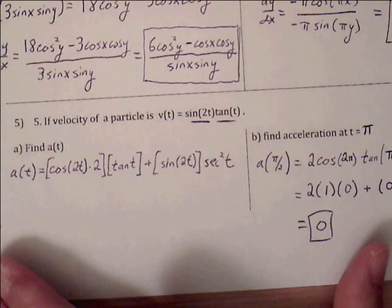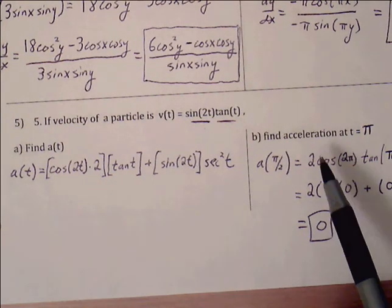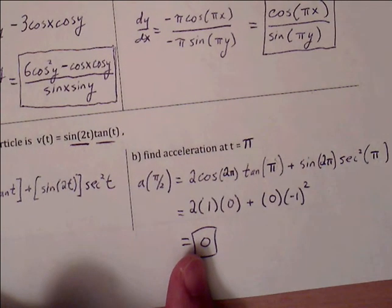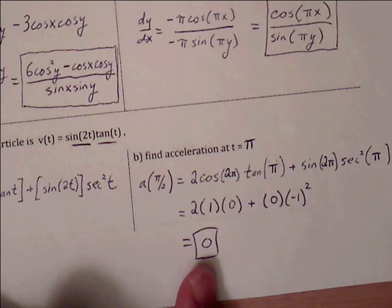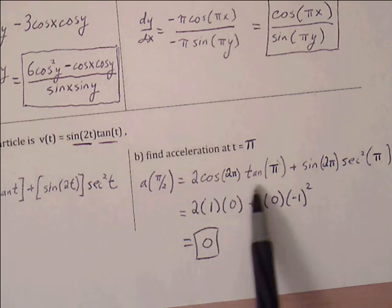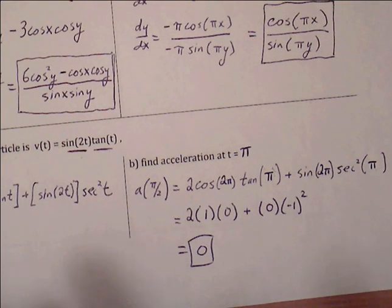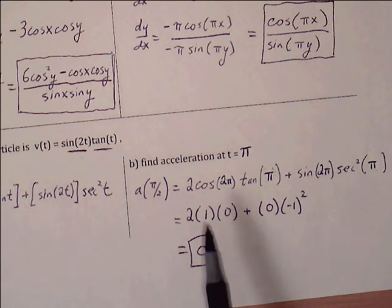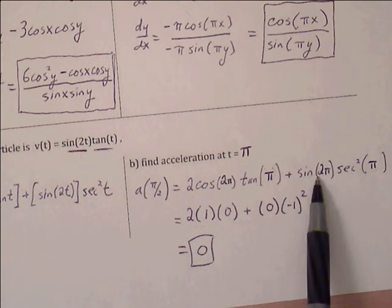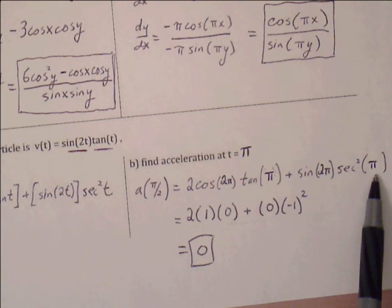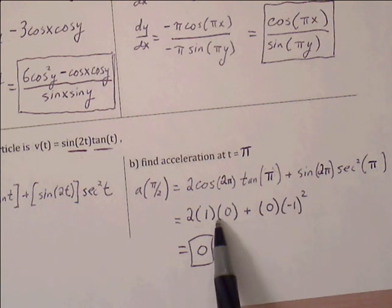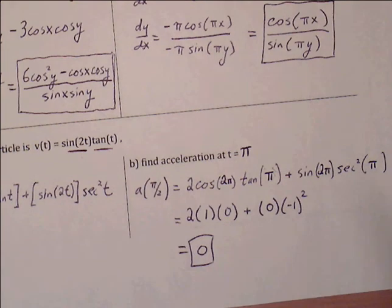Once we've found the acceleration function, part a is done. For part b, evaluate acceleration at t equals pi by replacing every t with pi: 2 cosine(2 pi) times tangent(pi) plus sine(2 pi) times secant squared(pi). Cosine(2 pi) is 1, tangent(pi) is 0, sine(2 pi) is 0, and secant squared(pi) is 1 (since secant(pi) equals negative 1, squared gives 1). So we get 0 plus 0, which equals 0.